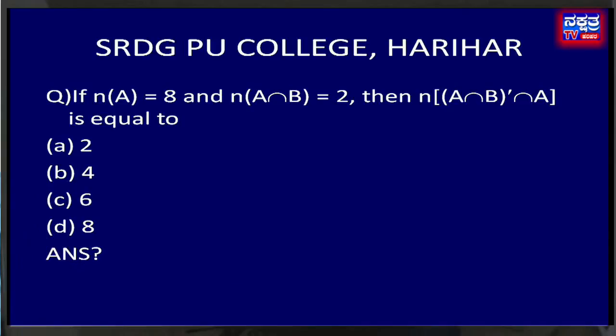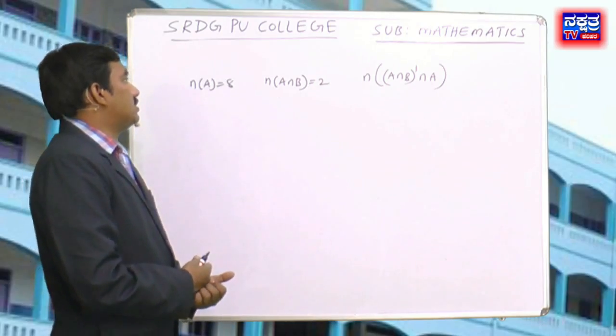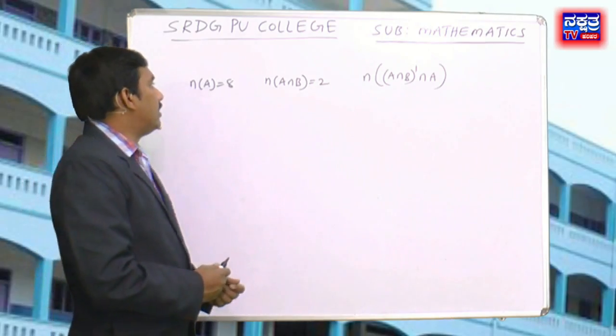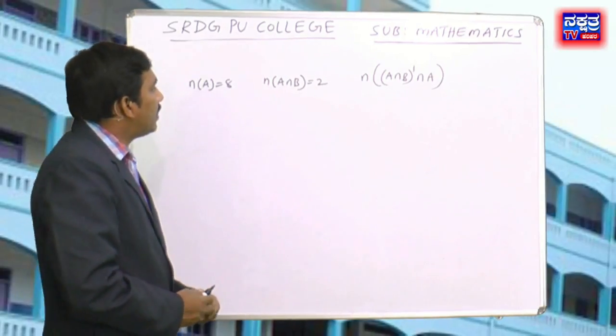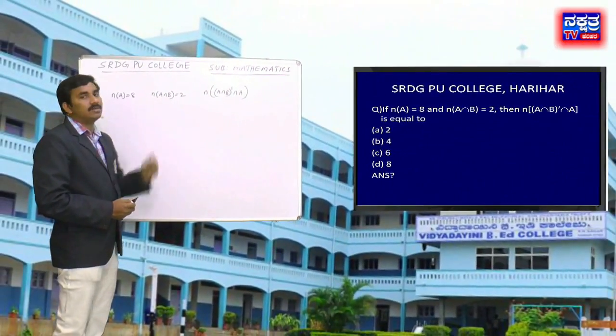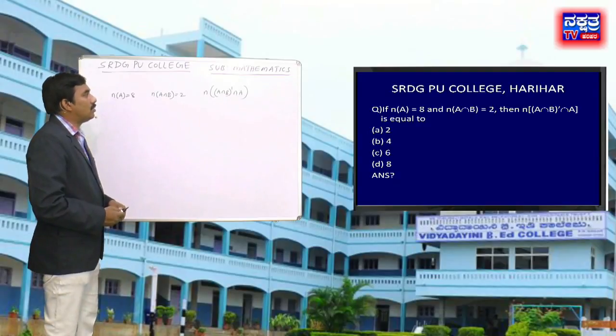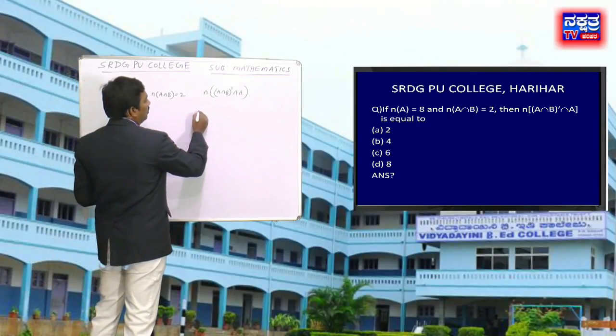...and n(A∩B) equals 2, then n((A∩B)' ∩ A) is equal to: option A: 2, option B: 4, option C: 6, option D: 8. Given n(A) equals 8, number of elements in A, and n(A∩B) equals 2.